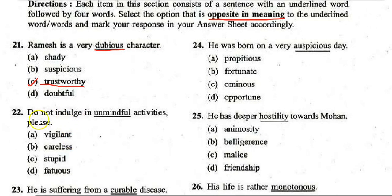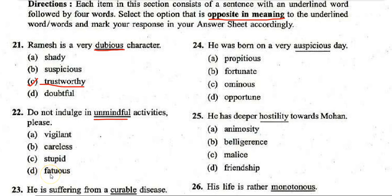Next: 'Do not indulge in unmindful activities.' Options: A. Vigilant, B. Careless, C. Stupid, D. Fatuous. The correct answer is A — 'vigilant.' The antonym of 'unmindful' is 'vigilant.'